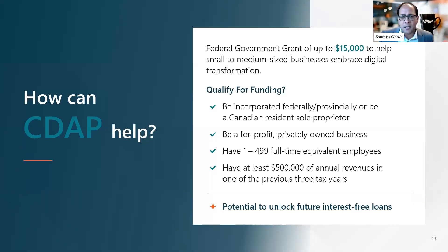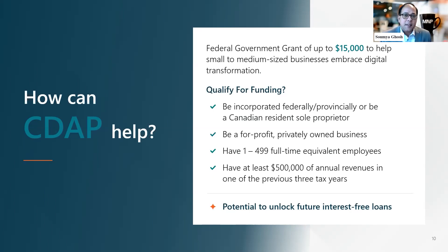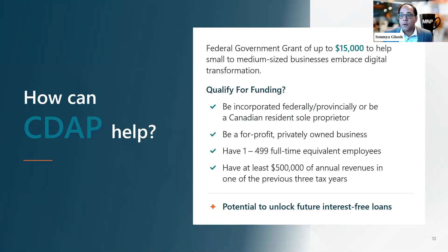The loan is interest-free for five years, plus you get one year to do the actual implementation work — so assuming implementation takes a year, you get the interest-free loan for up to six years. Regarding the loan amount: if your gross revenue is below $5 million, you are eligible for a loan between $25,000 and $50,000. If it's above $5 million, you can seek a loan amount between $25,000 and $100,000.